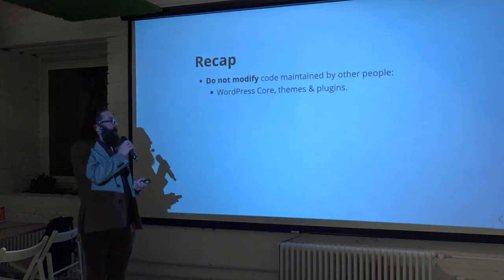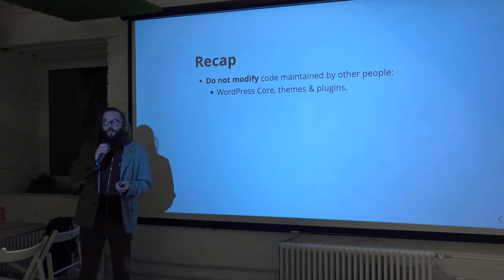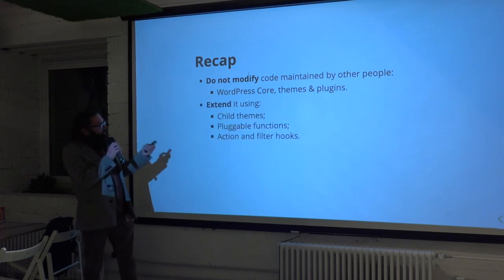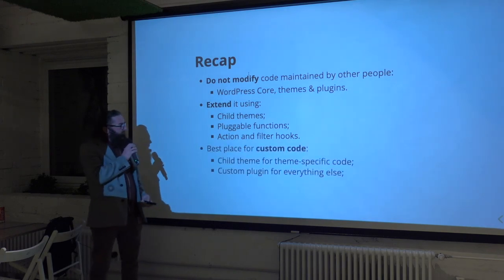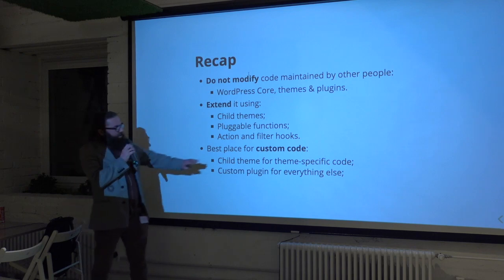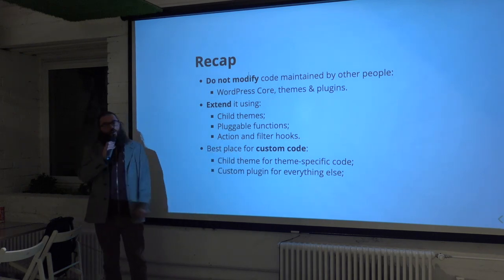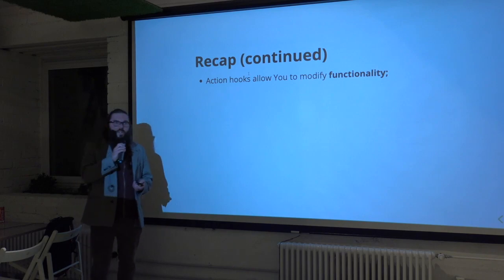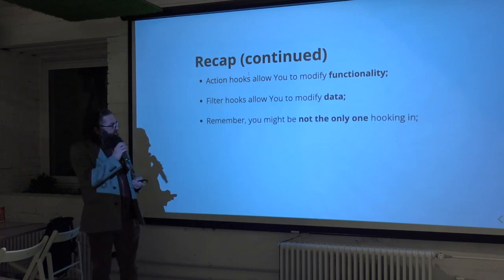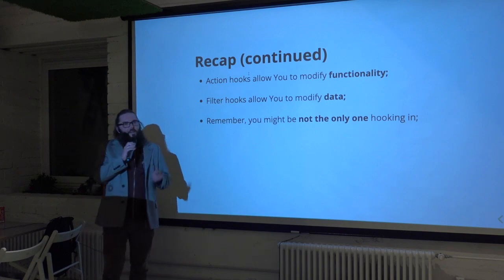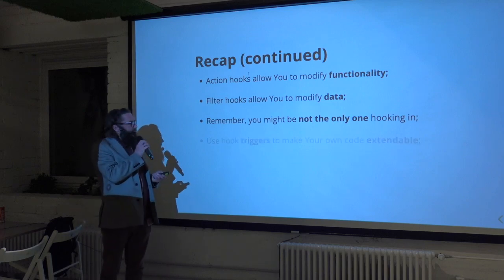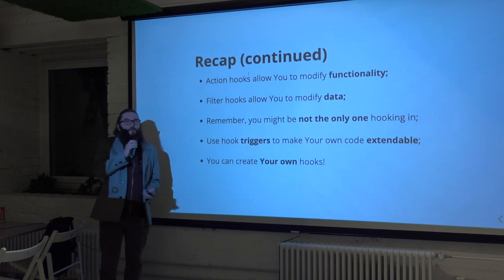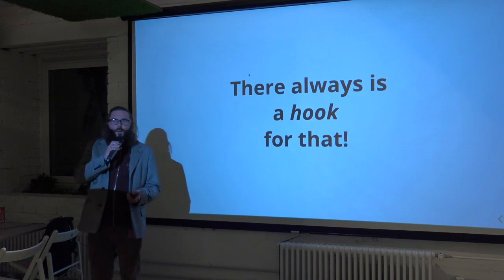To recap: you should never modify code that is maintained by other people — that includes WordPress core, themes, and plugins. You can extend it using child themes, pluggable functions, and action and filter hooks. The best places for custom code are a child theme for theme-specific presentational code, and custom plugins for everything else. Action hooks allow you to modify WordPress functionality. Filter hooks allow you to modify data. Remember you might not be the only one hooking in, so play nice with other people. And use hook triggers to make your own code extendable — you can create your own hooks. As Apple used to say: there is always a hook for that.